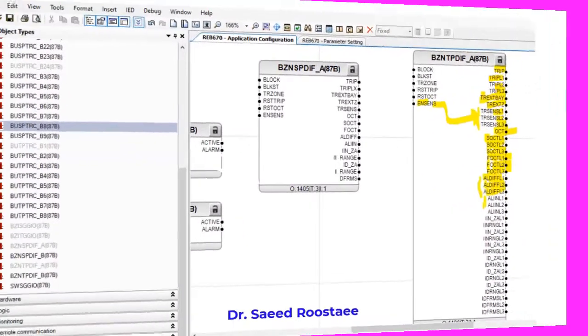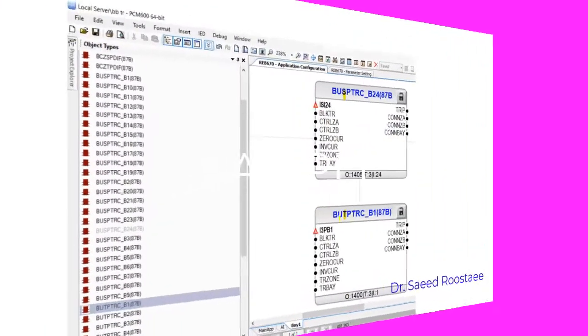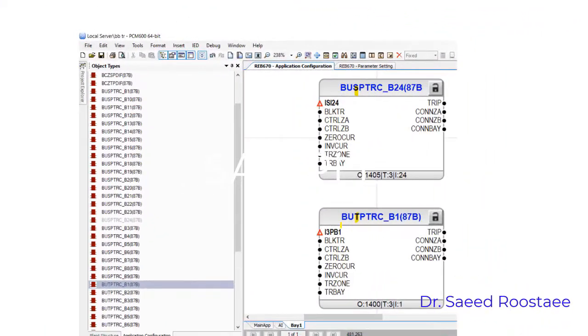AL means alarm, I for current, IN for incoming, and L1 for the phase. In this unit in the Siemens busbar differential protection system, bay units collect information like current and switch position from each bay.